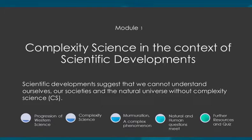This is the first module. In this module — Complexity Science in the context of scientific developments — we will look at how scientific development suggests that we cannot understand ourselves, our societies, or the natural universe without complexity science. We will see how the progression of western science has led to the development of complexity science, and take a look at murmuration as an example of a complex phenomenon. Then we will discuss how natural and human questions meet within complexity science, and we will have further resources and a quiz to recapture the learning from this module.